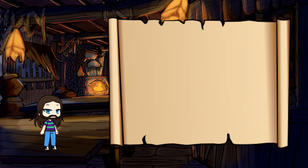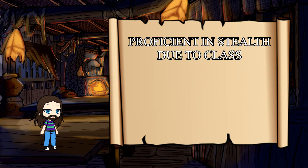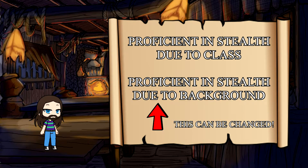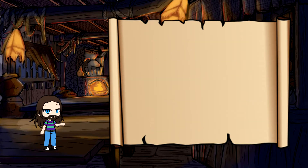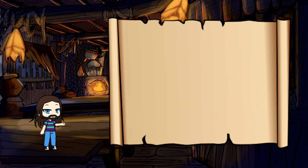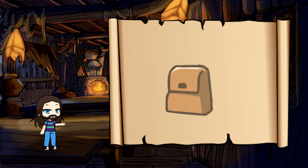However, when it comes to proficiencies, if you're already proficient in a certain skill due to your class, and your background also lets you gain proficiency in the same skill, you can choose another skill to be proficient in as long as it's in the same category. This can also affect your tool proficiencies as well. Just to clarify, these are not the same as feats. Some backgrounds even allow you to learn another language.